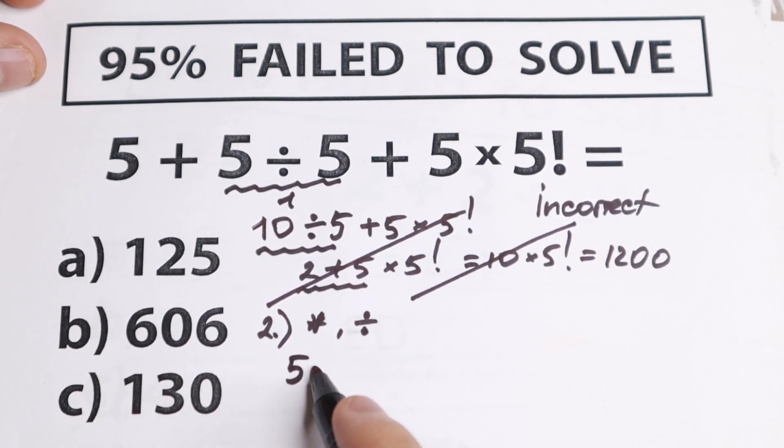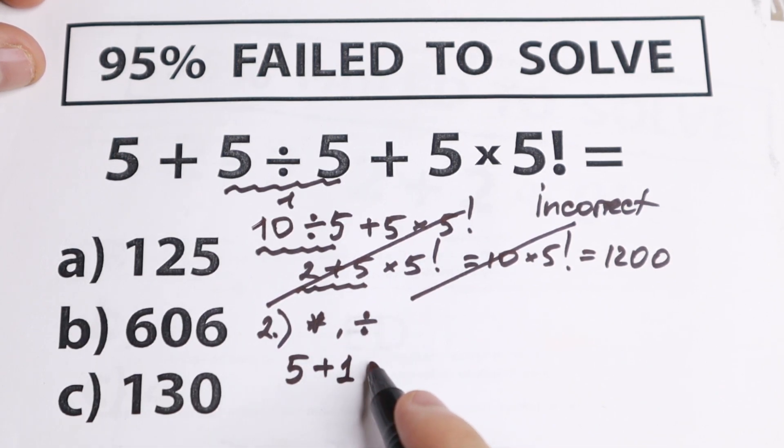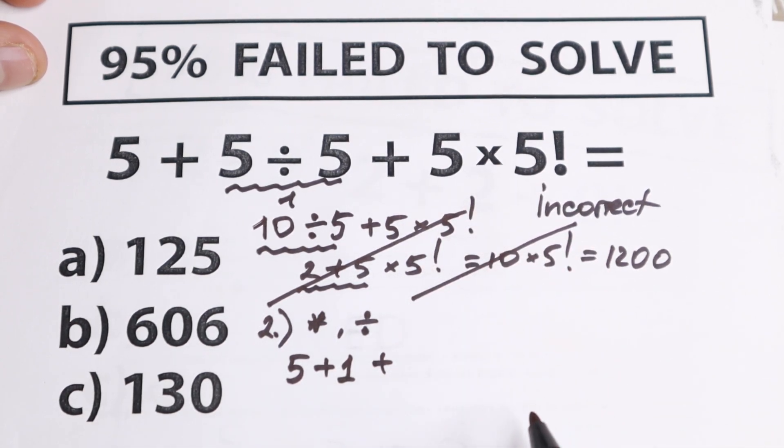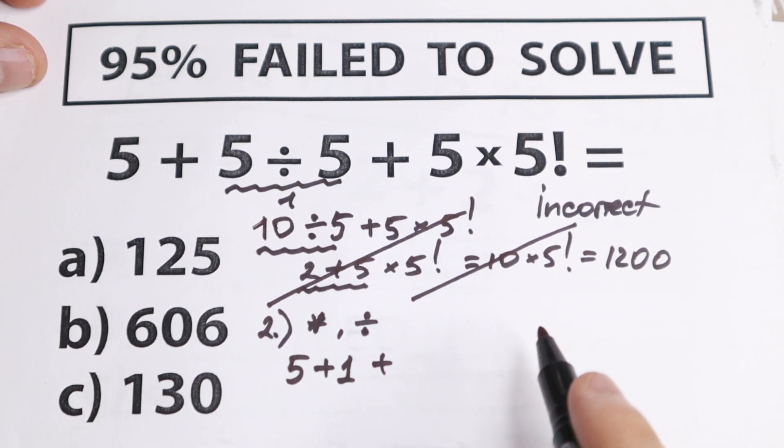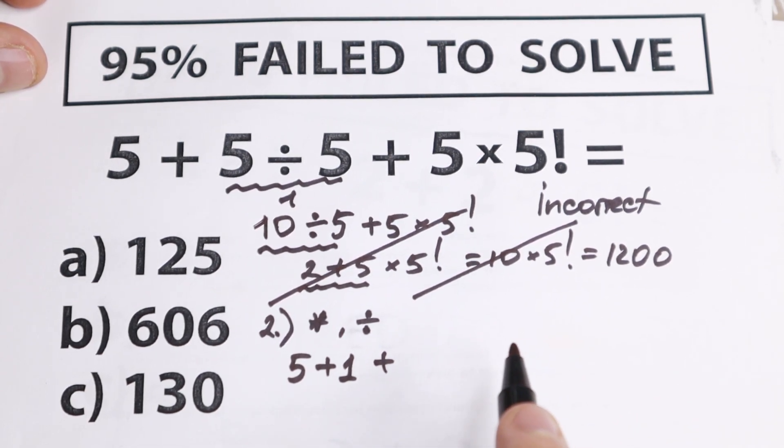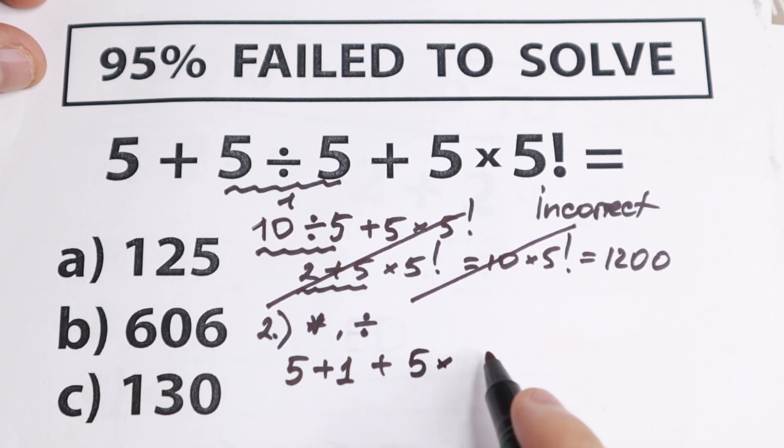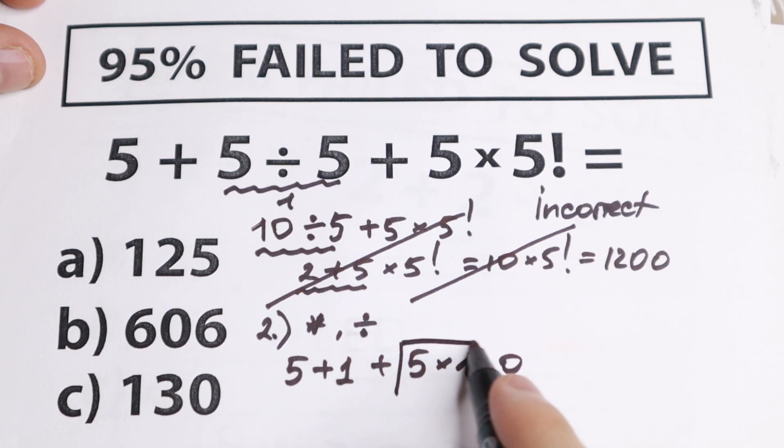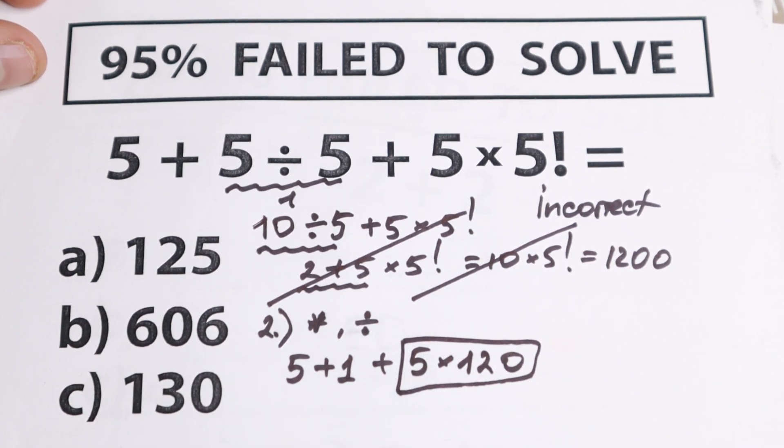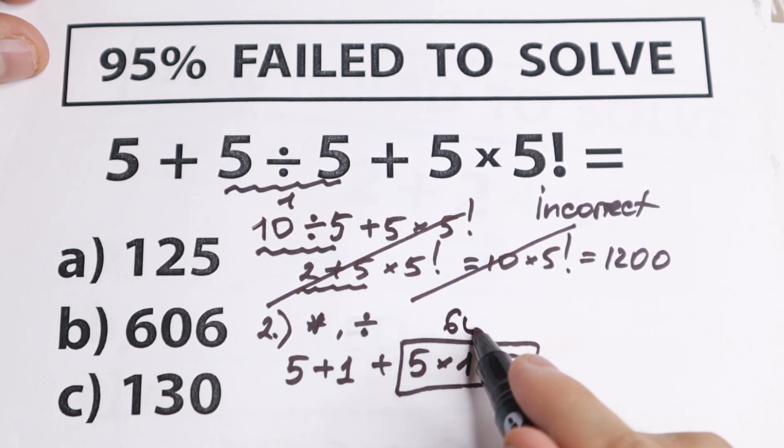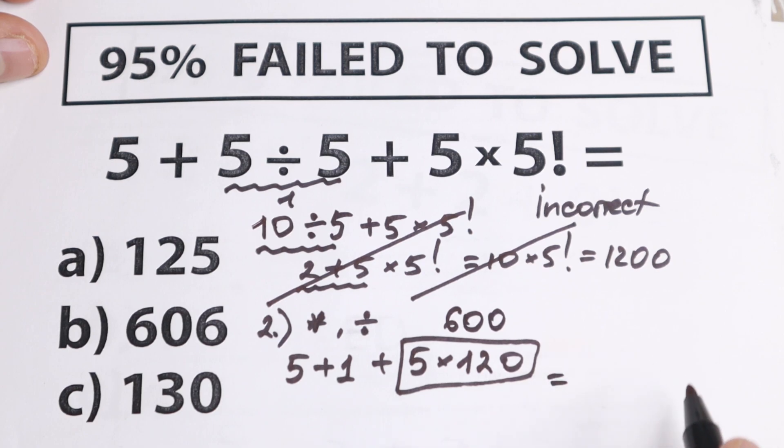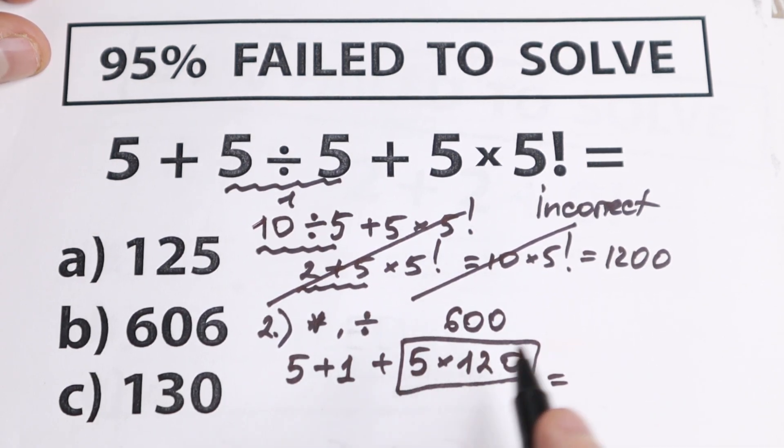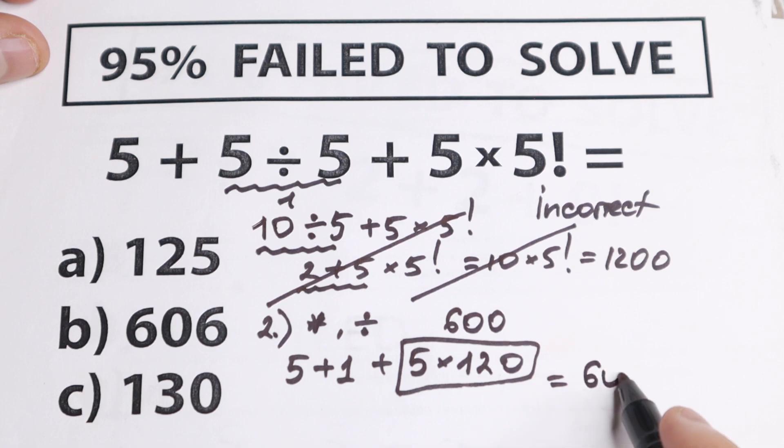So we'll have 5 + 1, and then plus we need to multiply 5 × 5! because we work with multiplication. Right here 5! equals 120. So we will have 5 + 1 + 5 × 120. At first we need to multiply this because we have multiplication first. 5 × 120 equals 600. Let's add all of this: 600 + 1 + 5 equals 606.